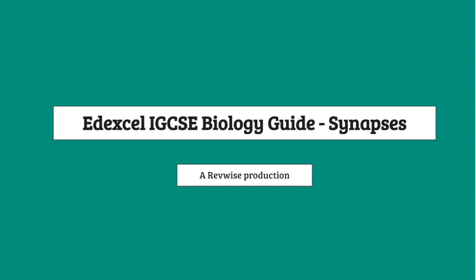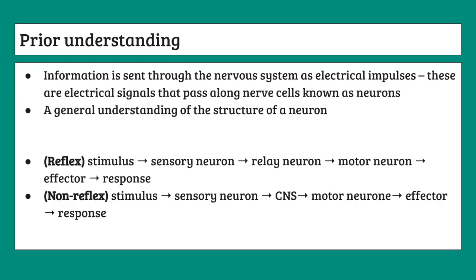Before we go into any content, we need to establish some prior understanding because synapses aren't something you can just understand off the get-go. You need some prior understanding about neurons and nerves. The first thing you need to know is that information is sent through the nervous system in the human body as electrical impulses — electrical signals that pass along nerve cells known as neurons, and a group of neurons is what you call a nerve.